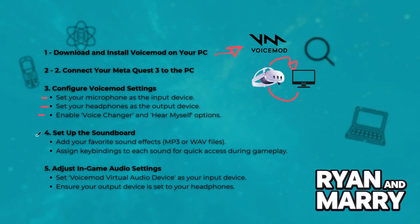Step 4: Set up the soundboard. Navigate to the soundboard tab in Voicemod, and here you can add your favorite sound effects. Assign keybinds to each sound for quick access during gameplay.